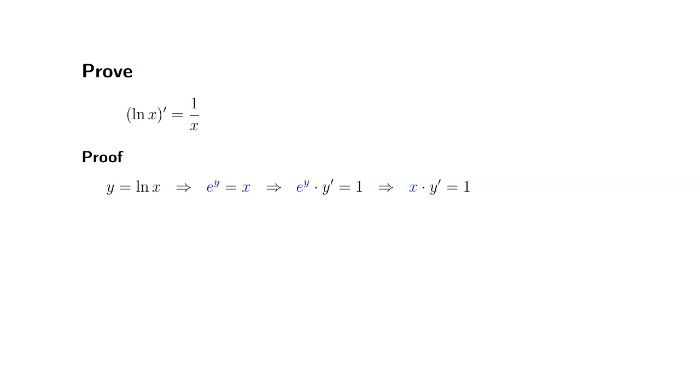So you're going to have x times y prime equals 1. Then we can simply divide through by x. We get y prime equals 1 over x.